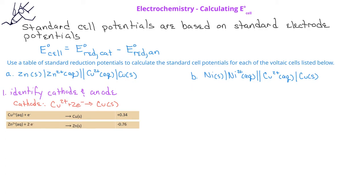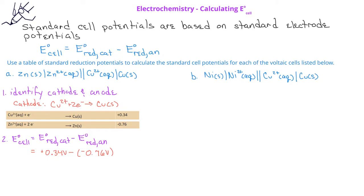The zinc/zinc-2+ half-reaction, when we look at the table of standard electrode potentials, has a reduction potential of minus 0.76 volts. We plug these values into the equation to calculate the standard cell potential: 0.34 volts for the copper-2+/copper half-reaction minus negative 0.76 volts for the anode compartment. This gives us a standard cell potential for the zinc/zinc-2+, copper-2+/copper voltaic cell of plus 1.10 volts.